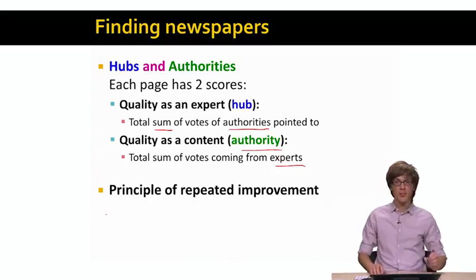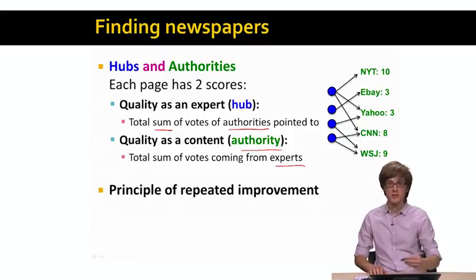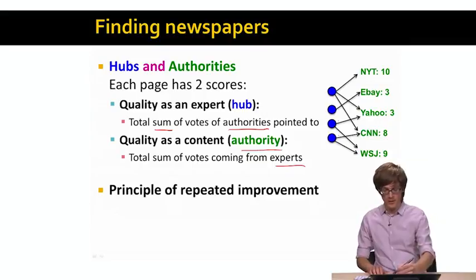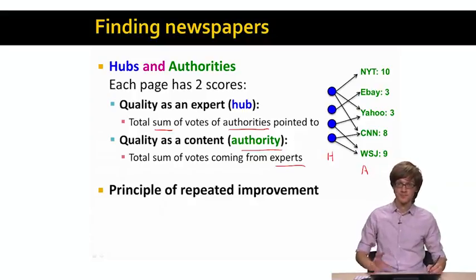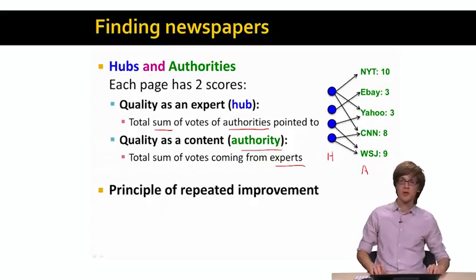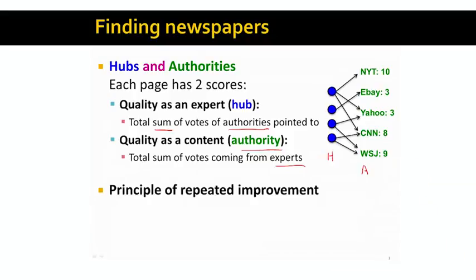We will apply the principle of repeated improvement to compute the steady-state scores. We can think of the web as a bipartite graph where we have a set of hub pages on one side and a set of authorities on the other. Authorities are web pages that provide good content, and hub pages are web pages that have useful links to those good authorities.